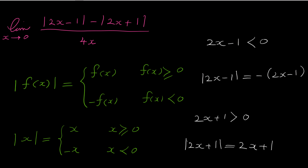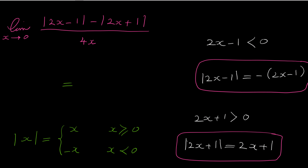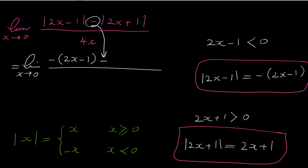Now that we can get rid of the absolutes in the numerator with these two relations, finding the limit is simple. Let me clean here to make space. We can rewrite this limit as: limit as x approaches 0 of negative of (2x minus 1), minus (2x plus 1), all over 4x — don't forget the minus sign between the two absolute terms.